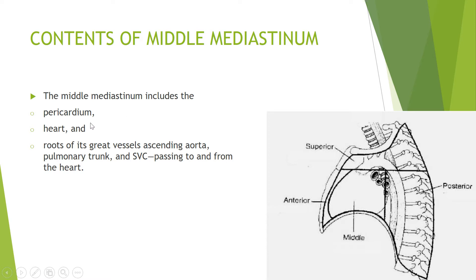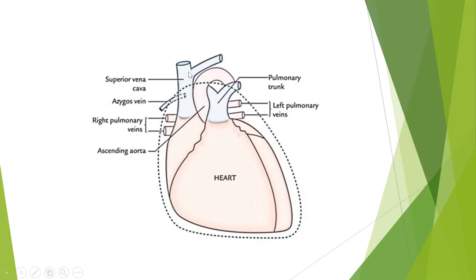So what are the contents? Number one is pericardium, number two is heart, number three is all great blood vessels which are the ascending aorta, pulmonary trunk, and superior vena cava. These are the great vessels present in the Middle Mediastinum.